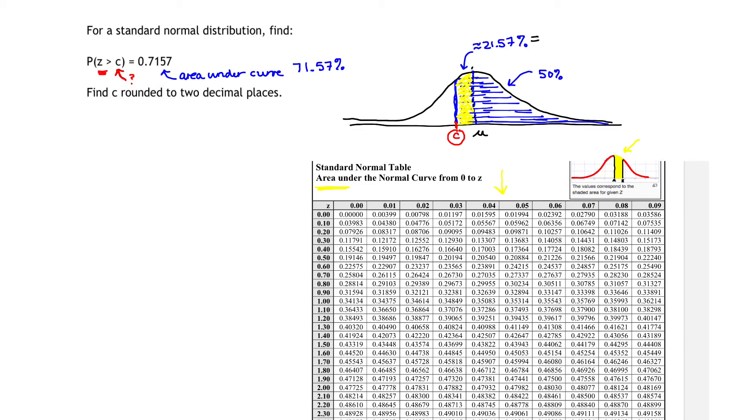The percentage of area shaded in that yellow bar is 0.2157. Let's locate that number or as close as possible that number in our area chart.